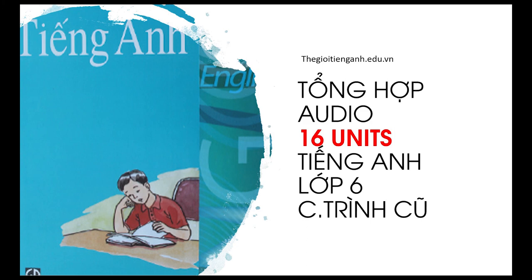Section B: The Taller Building, The Tallest Building. Listen and read, then answer the questions. Mexico City is the biggest city in the world. It has a population of 13.6 million. Tokyo is smaller. It has a population of 12 million. London is the smallest of these three cities. It has a population of 6.3 million. In Vietnam, Hanoi has a population of 2.6 million. Ho Chi Minh City is bigger than the capital. It has a population of 3.5 million.